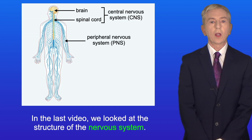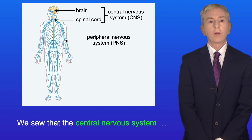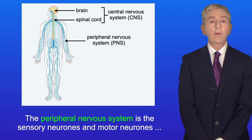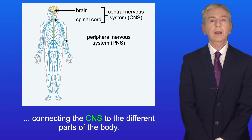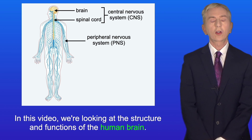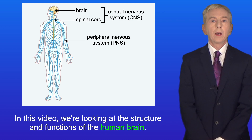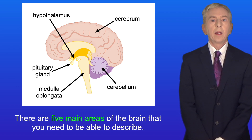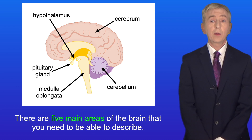In the last video we looked at the structure of the nervous system. We saw that the central nervous system consists of the brain and the spinal cord, and the peripheral nervous system is the sensory neurons and motor neurons connecting the CNS to the different parts of the body. In this video we're looking at the structure and functions of the human brain, showing the gross structure with five main areas to describe.